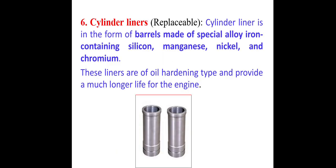Next are cylinder liners. A cylinder liner is an important component in the form of a barrel, made of a special alloy containing silicon, manganese, nickel, and chromium. These liners are oil-hardening type, which provides a much longer life for the engine. They are fitted in the engine block.